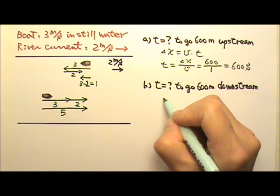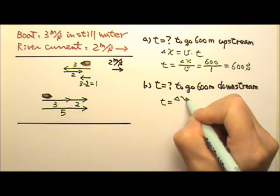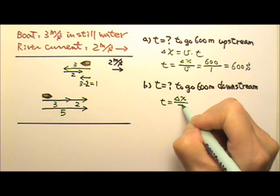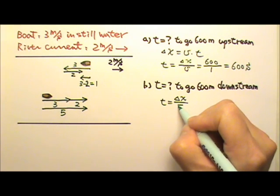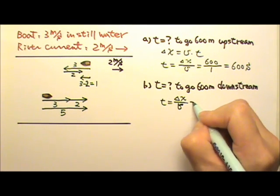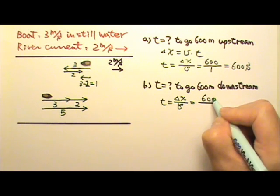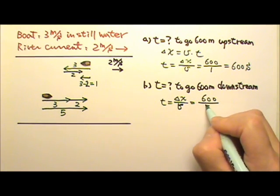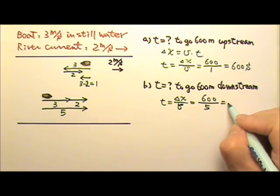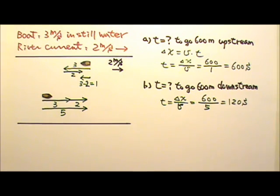So the time would be the displacement divided by the velocity: 600 divided by 5, which is 120 seconds.